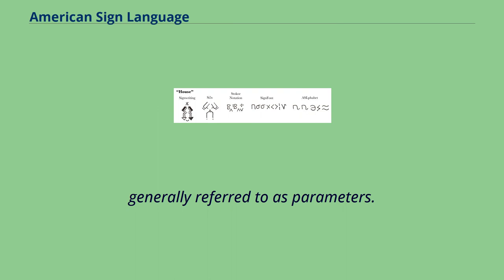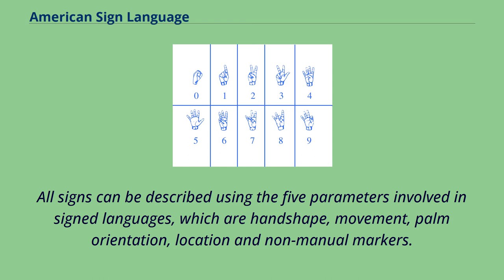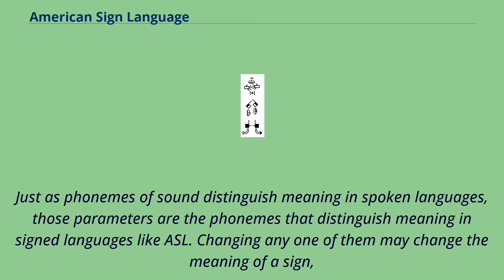A sign may use one hand or both. All signs can be described using the five parameters involved in signed languages, which are handshape, movement, palm orientation, location, and non-manual markers. Just as phonemes of sound distinguish meaning in spoken languages, those parameters are the phonemes that distinguish meaning in signed languages like ASL. Changing any one of them may change the meaning of a sign.